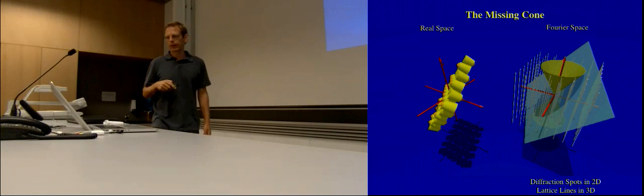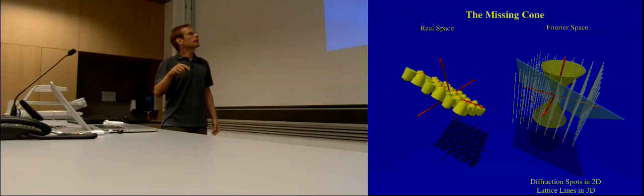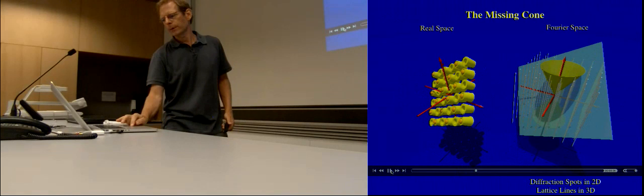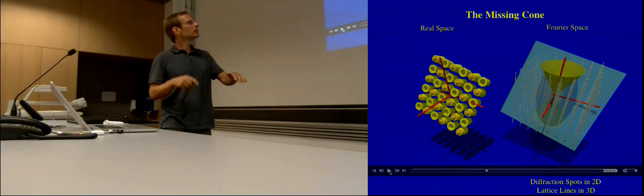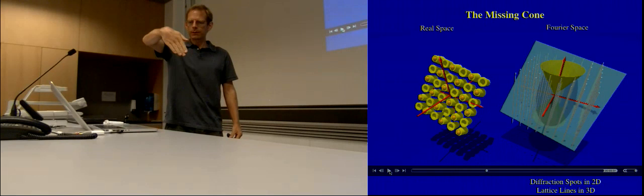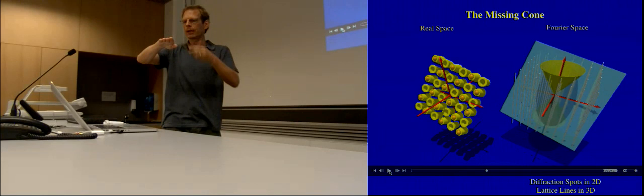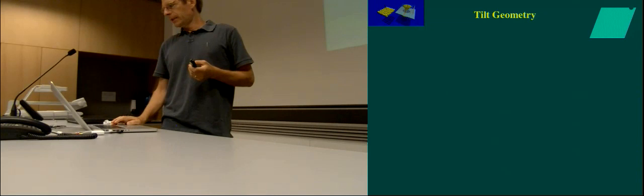In order to do this, we need to know what the tilt angle is. We need to know exactly where the tilt axis is and how much tilt we have. Then we know how to put these Fourier transformations into our 3D Fourier space. What we need to know is the tilt axis direction — is it tilted this way or that way? That's the tilt axis. And by how much — a little bit or a lot? That's the tilt angle.